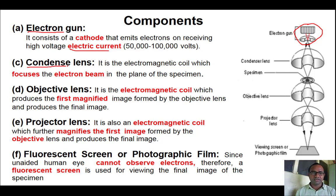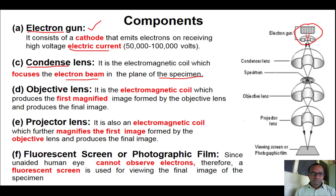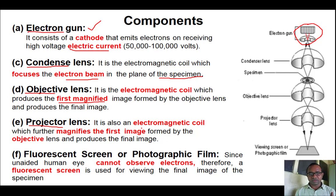The second component is the condenser lens, which is a kind of electromagnetic coil that focuses the electron beam coming from the electron gun onto the sample or specimen. Third is the objective lens, which is also a kind of electromagnetic lens that produces the first magnified image of the sample. The projector lens is another electromagnetic lens that magnifies the first image produced by the objective lens.